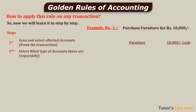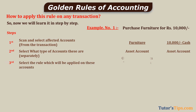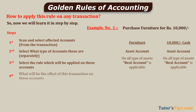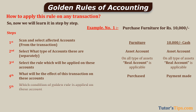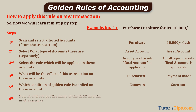Step two: select what type of accounts these are. Both are assets, so the type of both accounts is asset account. Step three: select the rule applicable — on all types of assets, Real Account is applicable, so Real Account applies to both. Step four: what is the effect of this transaction? Furniture is purchased and payment is made in cash. Step five: which condition of the golden rule applies? Purchased means furniture comes into the business; payment means cash goes out of the business.